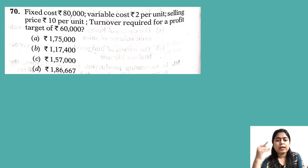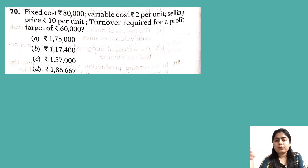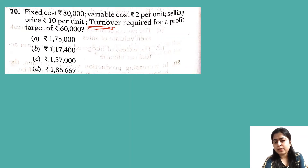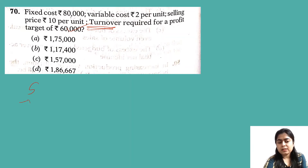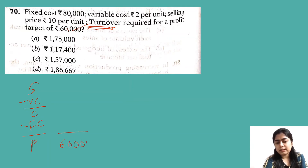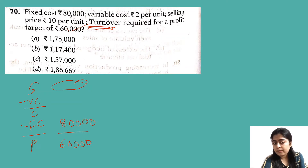Next question: Fixed cost is rupees 80,000, variable cost rupees 2 per unit, selling price rupees 10 per unit. Find the turnover required for a profit target of rupees 60,000. Turnover means sales value. We need to find the sales value at which profit will be 60,000.